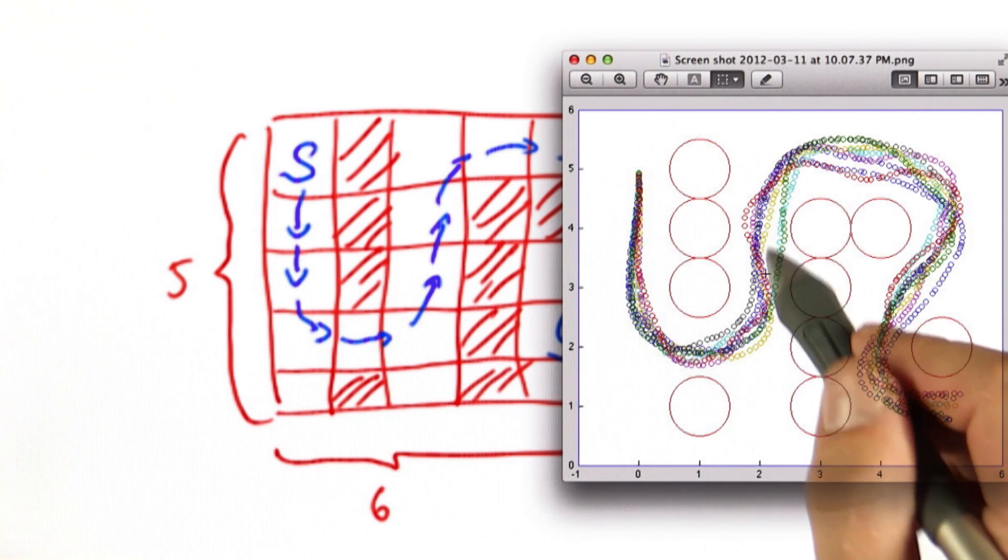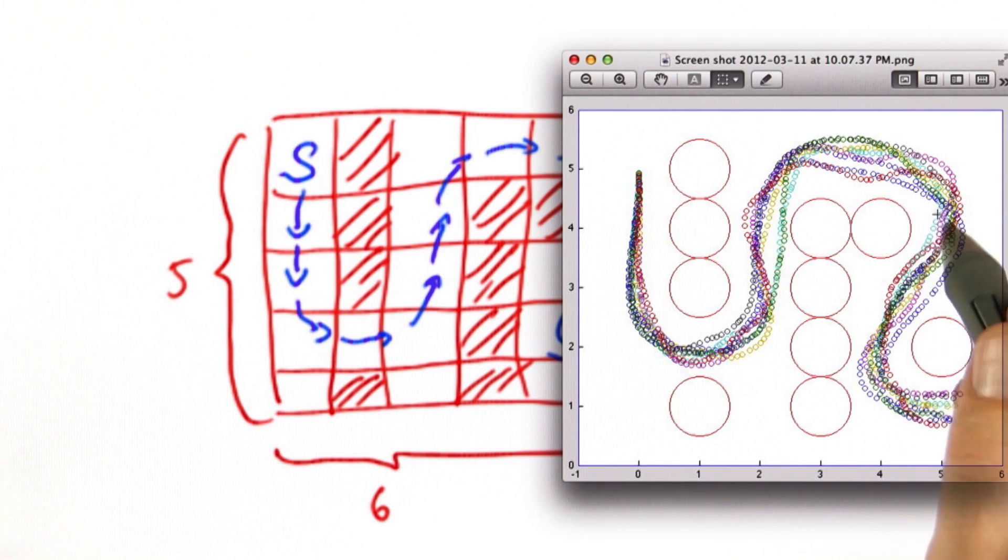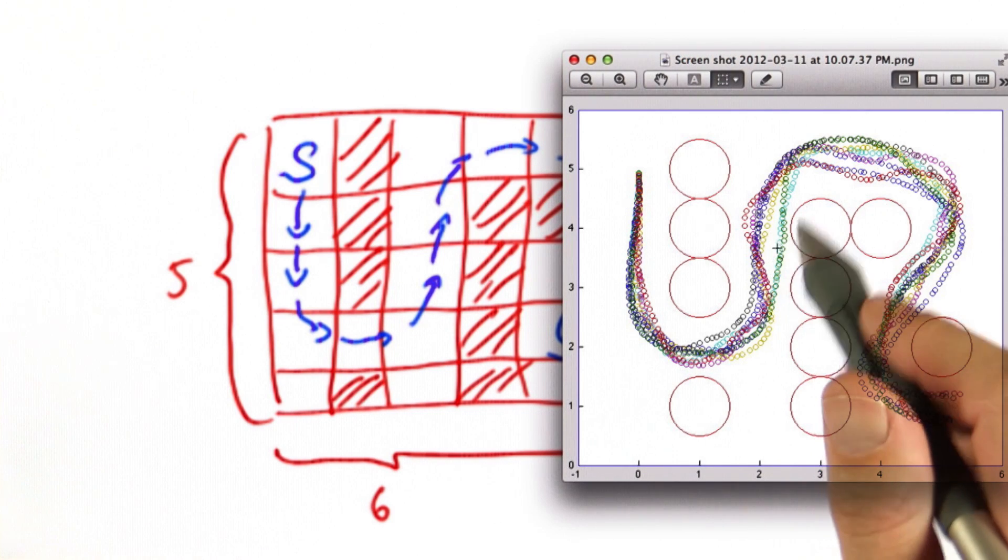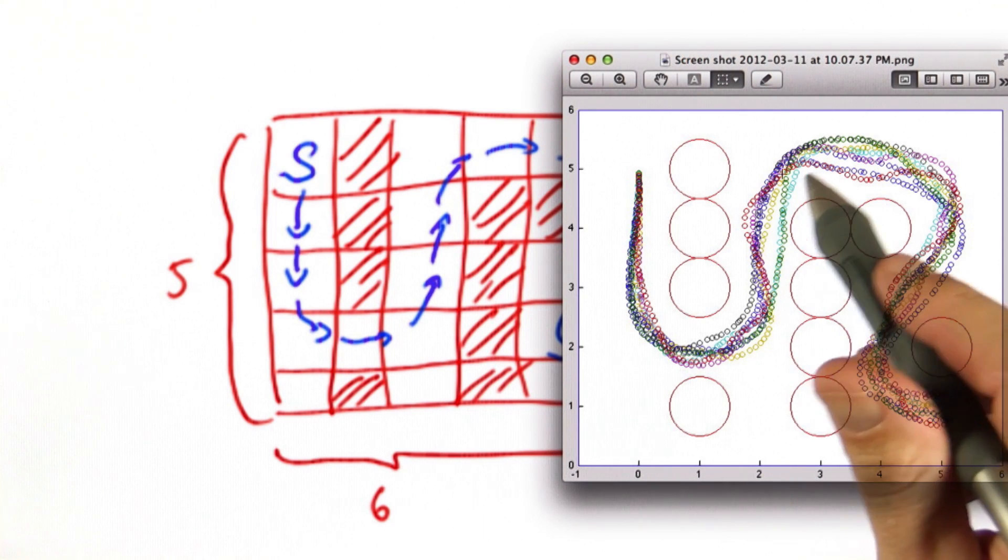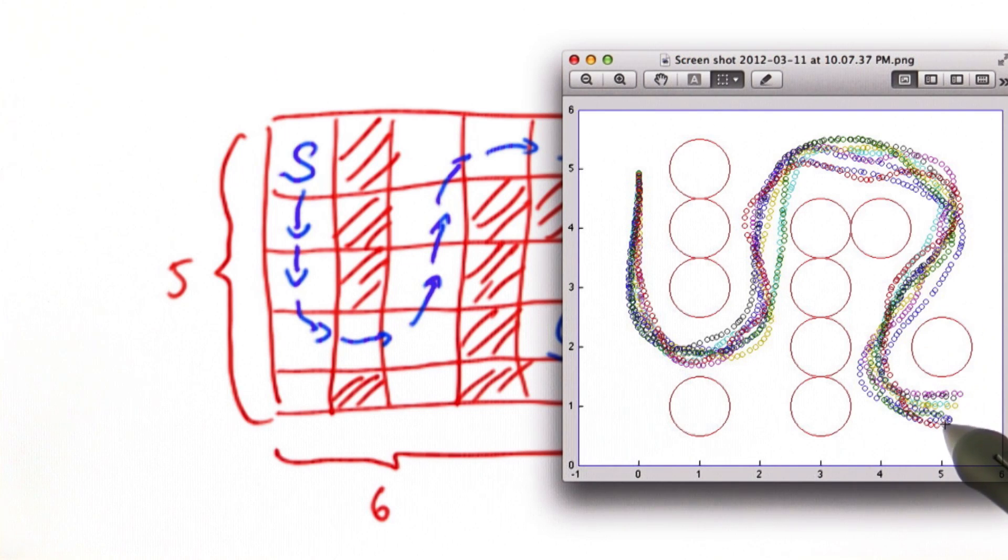And here are multiple runs using the same code. And you can see they're far from optimal. They are non-optimal because there's control noise and there's also measurement noise. But they all make it safely through free space into the corner where the goal objective is.